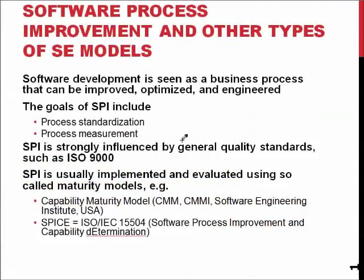In software engineering, besides development models such as Scrum, Extreme Programming, or Rational Unified Process, there are also different types of models and systems which describe how software processes happen. I'm going to go through some of the main types of software process models, and especially software process improvement and assessment models, which are not straightforward guidelines for how to develop software, but more or less a guide on how to develop the process that develops software, to get improvements on our software projects.